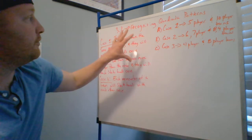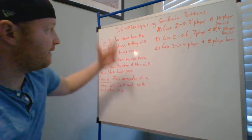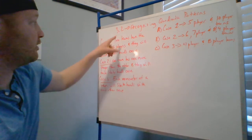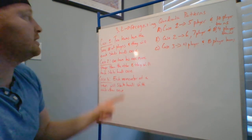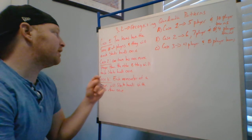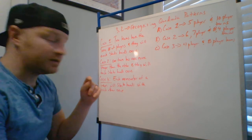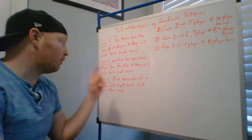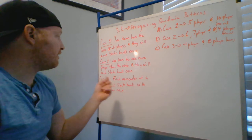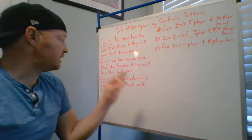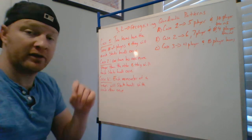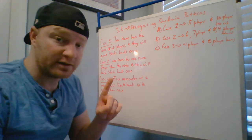If you want to follow along and see what they wrote in the book: Case 1 — there are two teams with the same number of players and they will each shake hands once. Case 2 — one team has one more player than the other and they will each shake hands once. Case 3 — each member of a team will shake hands with each other just once.